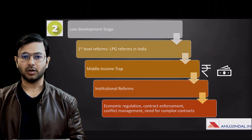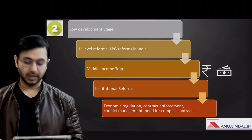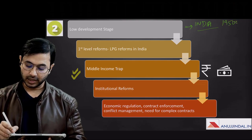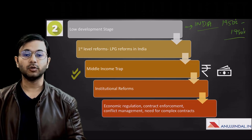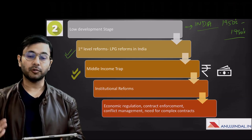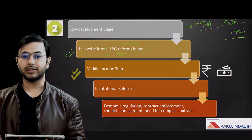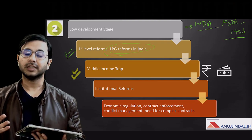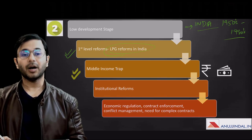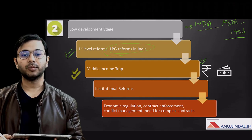The second long-term reason is the middle income trap, closely connected to the first. India was in the low-development stage from the 1950s to 1990s due to what we call the 'Hindu rate of growth.' This was broken by first-generation LPG reforms — liberalization, privatization, and globalization — which transformed India into a higher per capita GNP economy. However, when an economy gets stuck at that higher GNP range, it is said to be in the middle income trap.